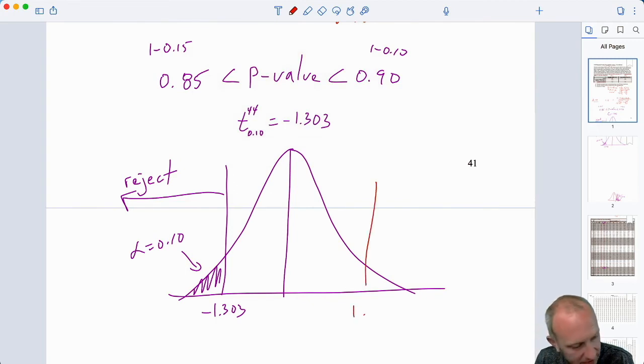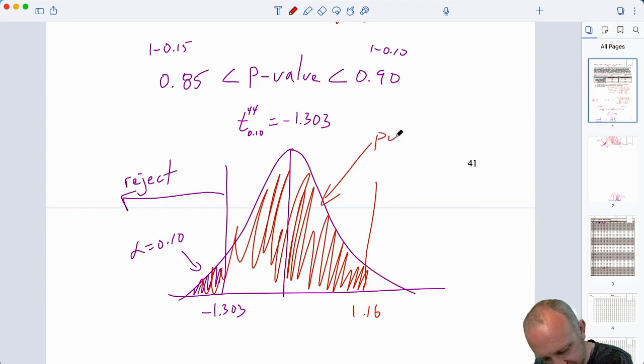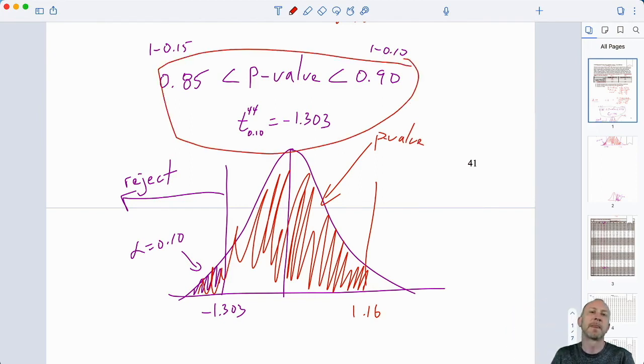We have a test statistic that is way up here. 1.16, I think. With a p-value, a lower tail test. So, our p-value is all of this region here. Right? That's our p-value. So, once again, our consistent results using either the p-value approach or the critical value approach. We certainly, we do not reject the null hypothesis. What does that mean?